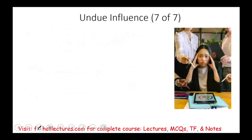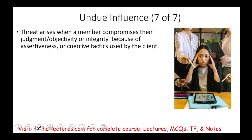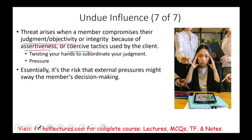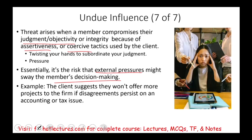The undue influence threat arises when a member compromises their judgment, objectivity, or integrity because of the assertiveness or coercive tactics used by the client. Simply put, the client is trying to twist your arm to subordinate your judgment — putting pressure on you to accept what they want you to accept. It's a risk that external pressure might sway the member's decision making. For example, the client might suggest they won't offer more projects if a disagreement on accounting or tax issues persists. This is undue influence.